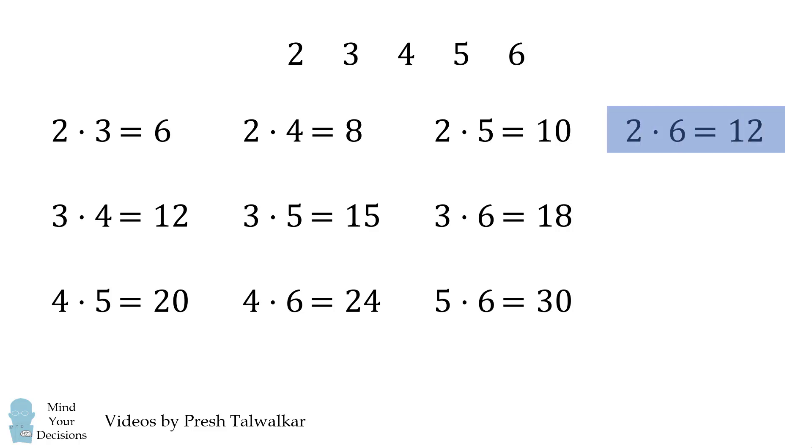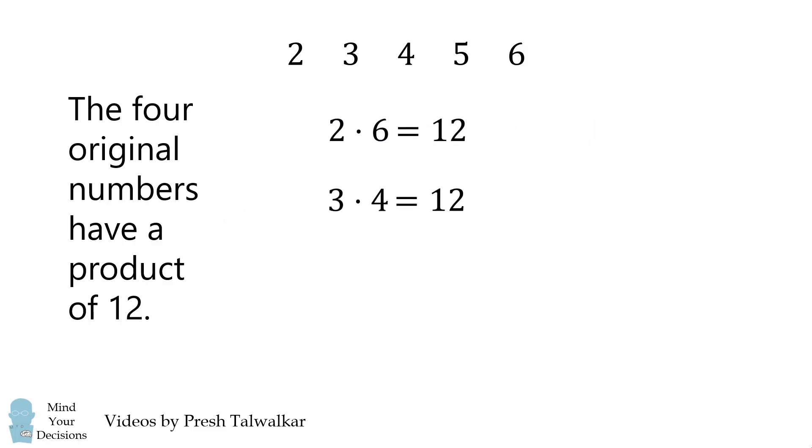When we examine these products, we have two ways that we can make 12. So this will reveal that 12 is the product of the four original numbers.